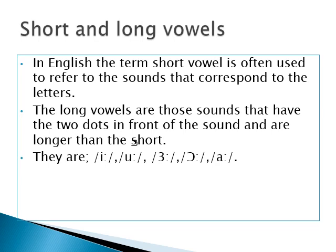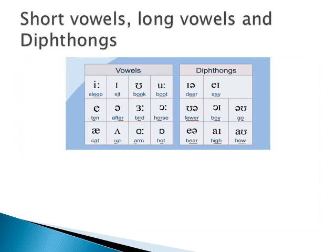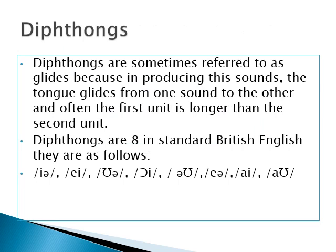The long vowel sounds are those that have two dots after the symbol; they are longer than short vowel sounds. These include the /iː/ sound, the /ɜː/ sound as in 'word,' the /uː/ sound as in 'poor,' and the /ɑː/ sound. There is a chart showing all 20 vowel sounds — short, long, and diphthongs — with example words. Diphthongs are sometimes called glides because the tongue glides from one sound to the other; the first unit is longer than the second. There are eight diphthongs in standard British English.